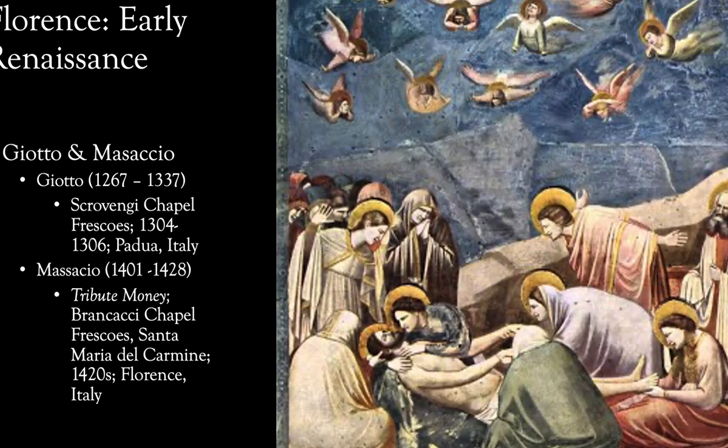Giotto was also an architect — he was one of the early architects for the Florence Cathedral, and he was responsible for designing the bell tower, which took almost 200 years to build and finally complete.